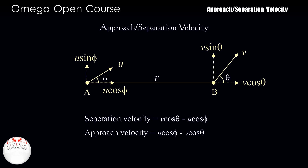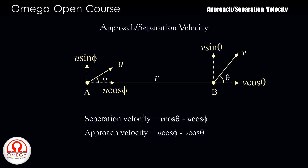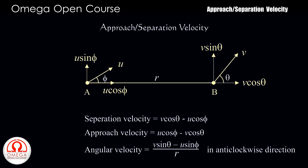The tangential speed of B with respect to A is V sin theta minus U sin phi. Hence the angular speed of B with respect to A is (V sin theta minus U sin phi) divided by R, in the anti-clockwise direction.